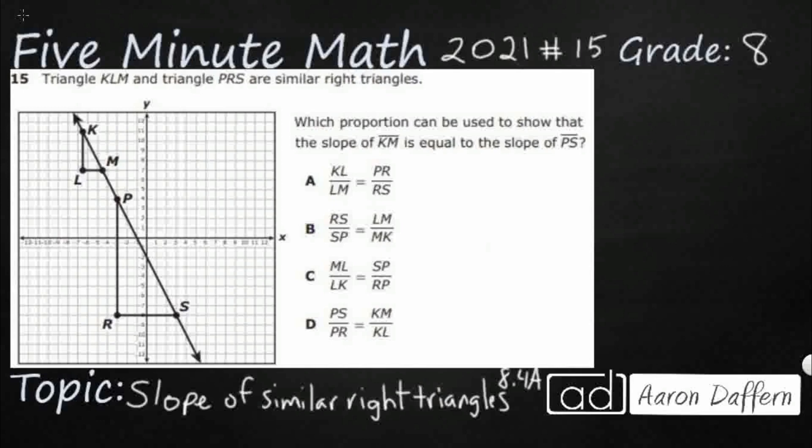So we've got two triangles here. They are similar and we need to find a proportion that shows that the slopes are equal. But you know what? That is also very evident here because they are sharing this same line for both hypotenuses. So how do we show that as a proportion?